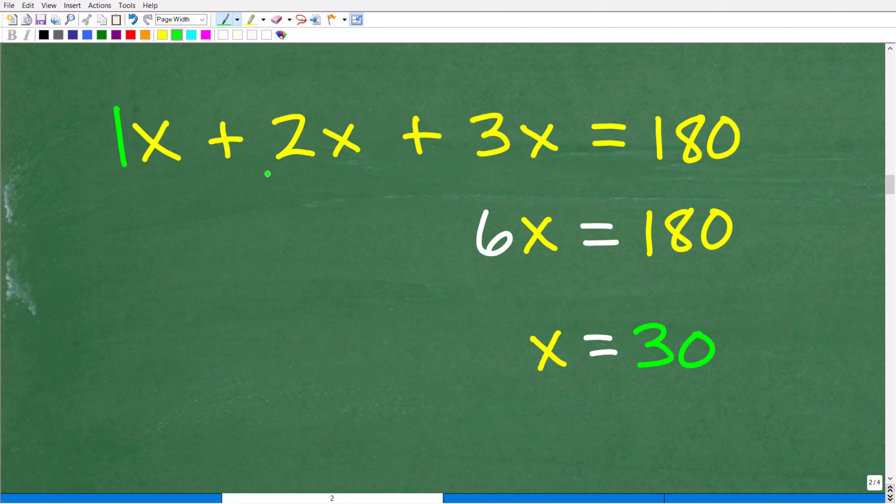So what are we going to do here? Well, we have 1x plus 2x plus 3x. So all of these are like terms. So this is going to be 1 plus 2 plus 3, and the last time I checked, that is 6. So that's going to be 6x is equal to 180. So to solve for x, all we have to do is divide both sides of the equation by 6. So x is equal to 30.